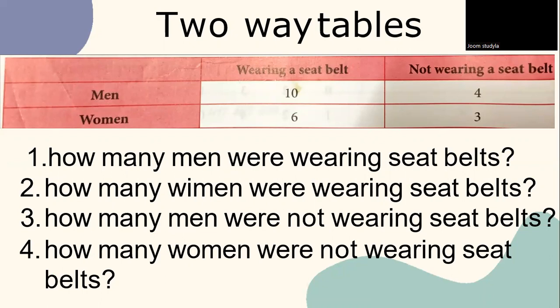Given question 1, how many men were wearing seatbelts? How to interpret this table? Wearing a seatbelt and a man. The answer for number 1 is 10. How many women were wearing seatbelts? See the columns, it's wearing a seatbelt and a woman. The answer is 6. How many men were not wearing seatbelts? Not wearing seatbelts and a man. The answer is 4. And how many women were not wearing seatbelts? Not wearing seatbelts and a woman. The answer is 3. This is a sample of two-way tables.